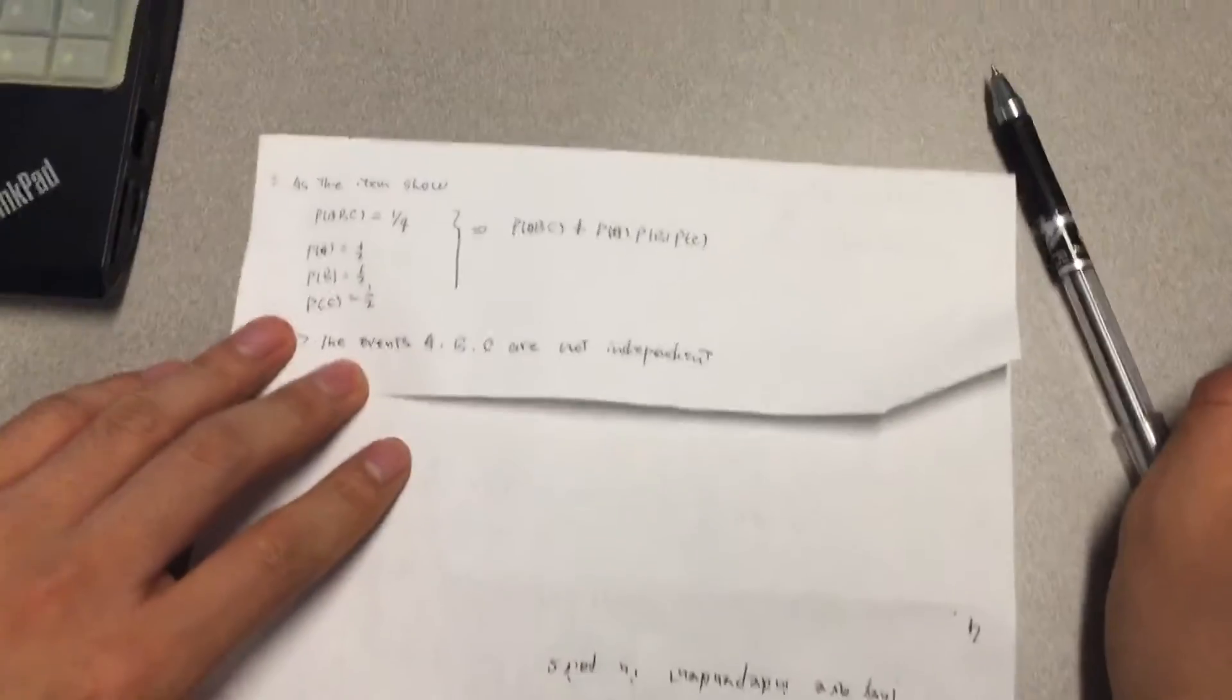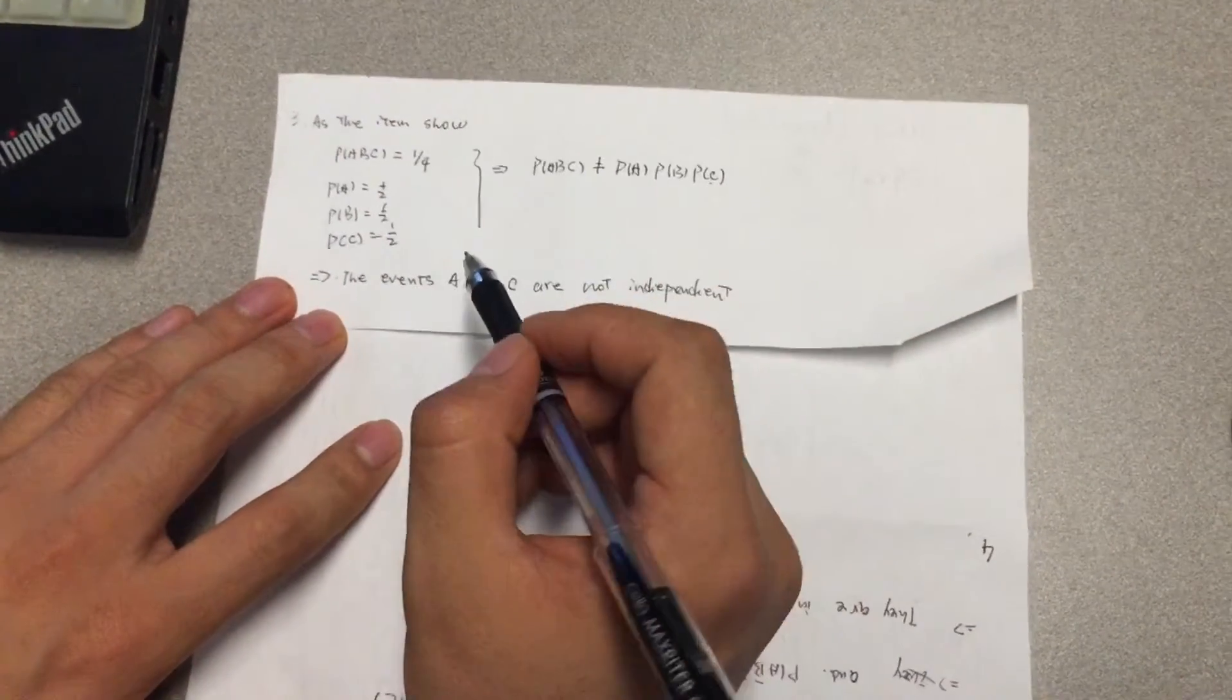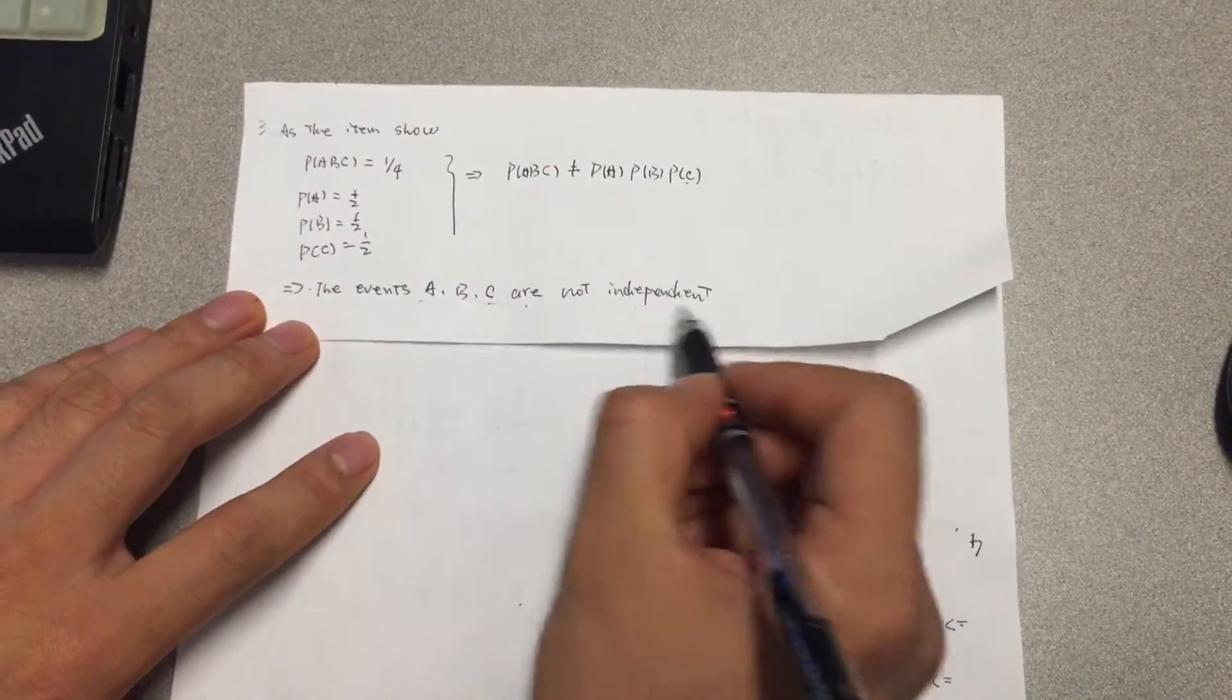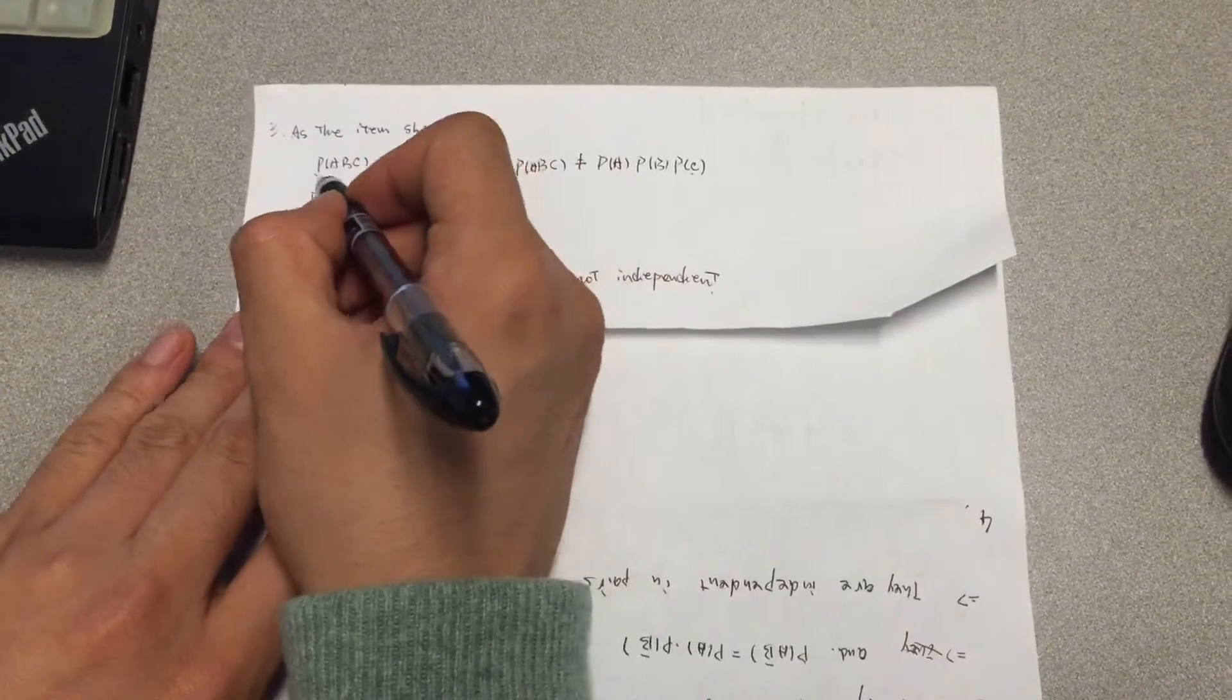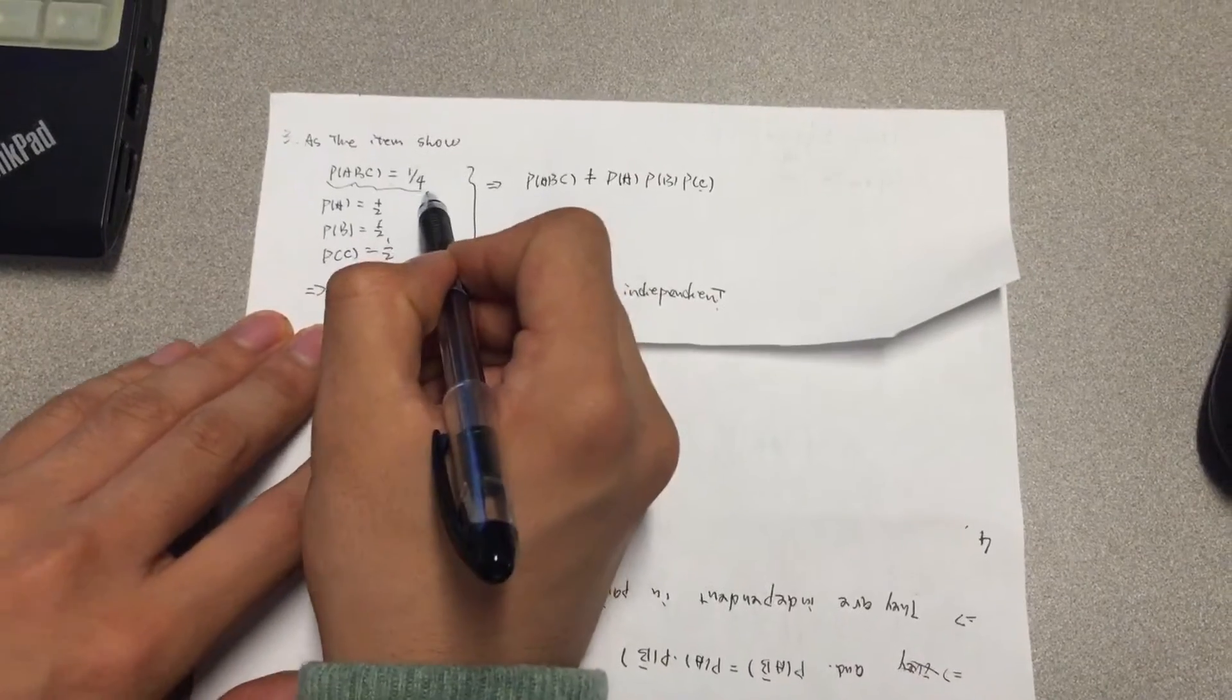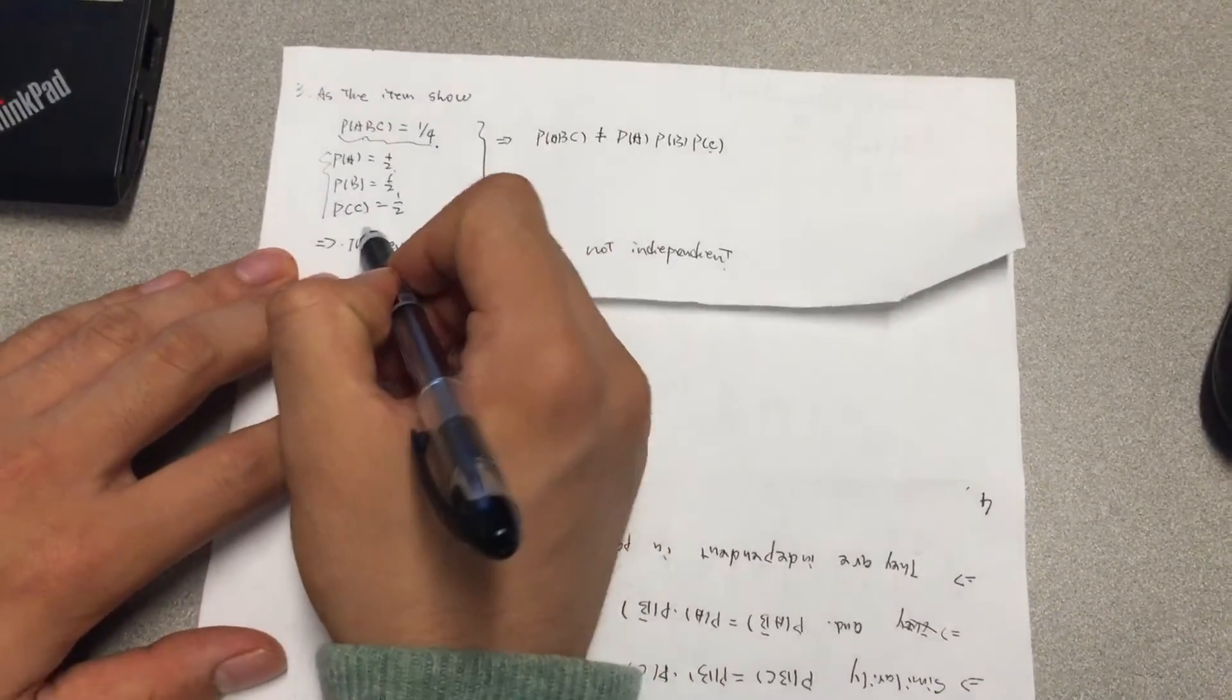As illustrated in the problem, in part A we need to demonstrate that events A, B, C are not independent. As we can know from the item, we can derive that P(A∩B∩C) equals 1/4, and P(A) is 1/2, P(B) equals P(C),